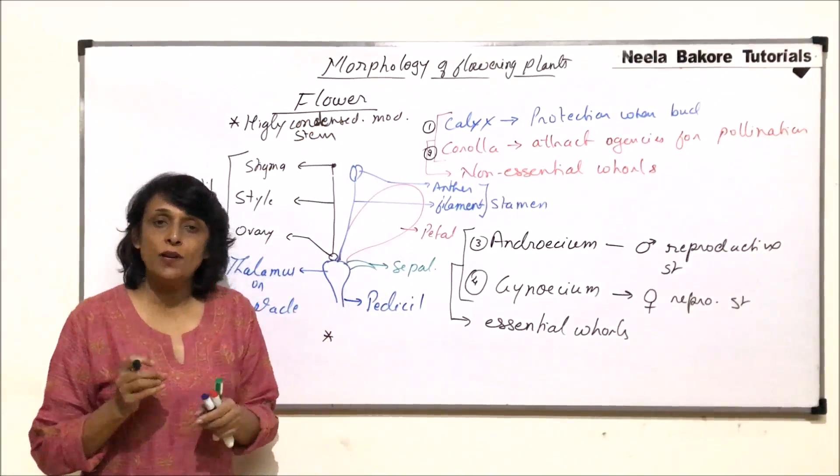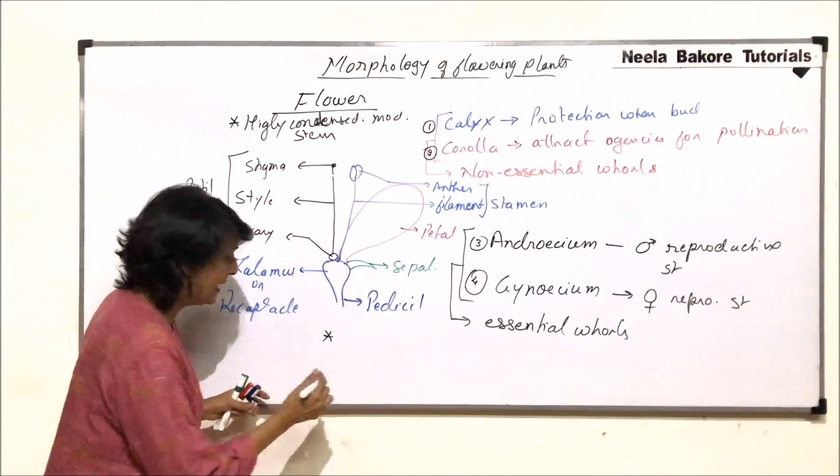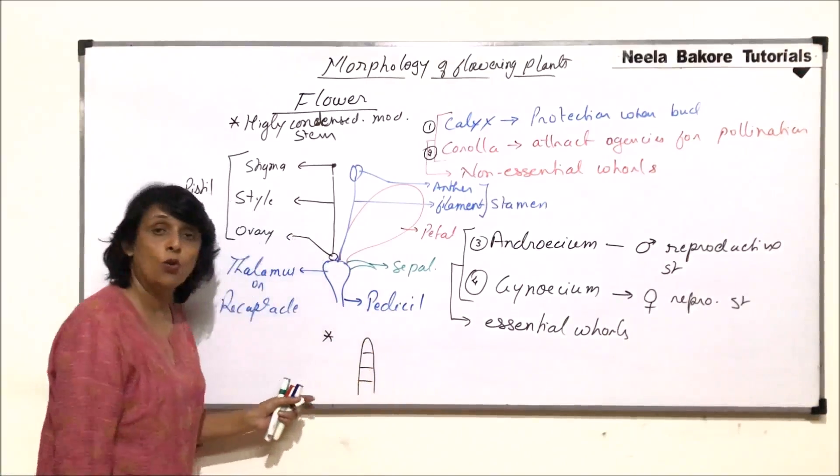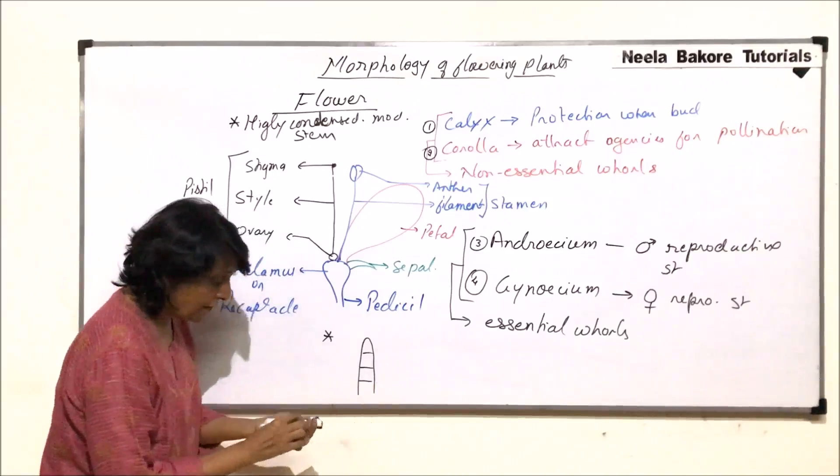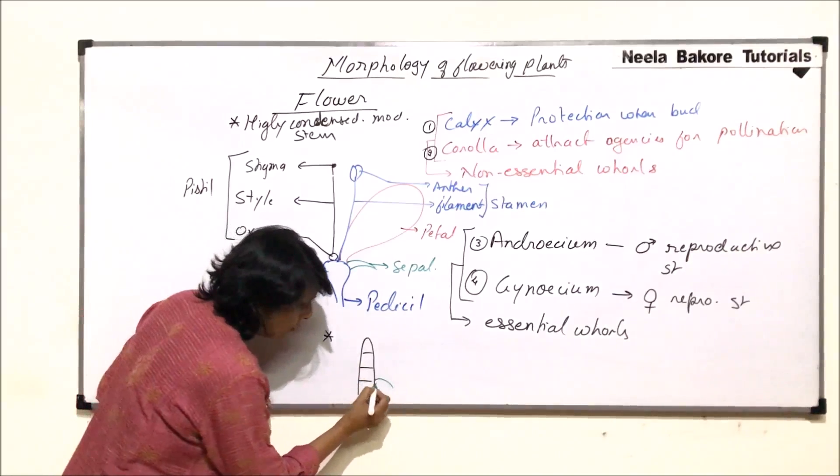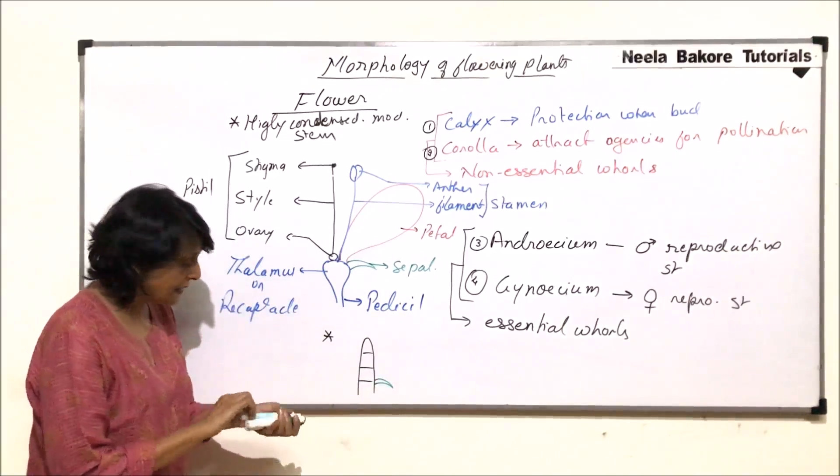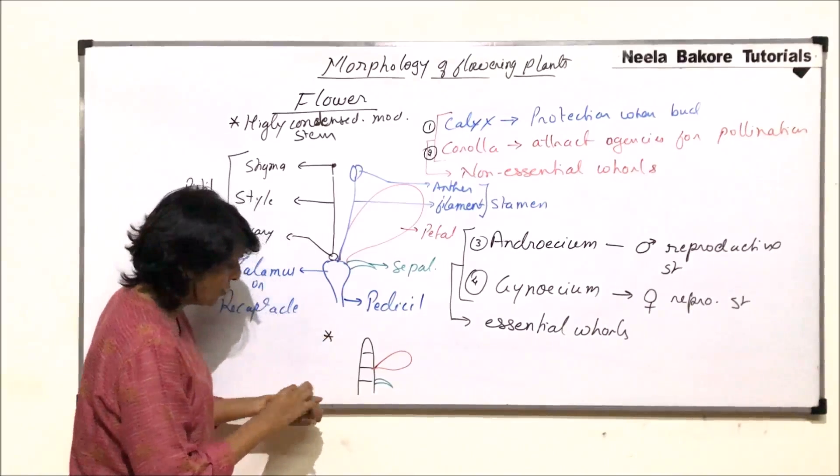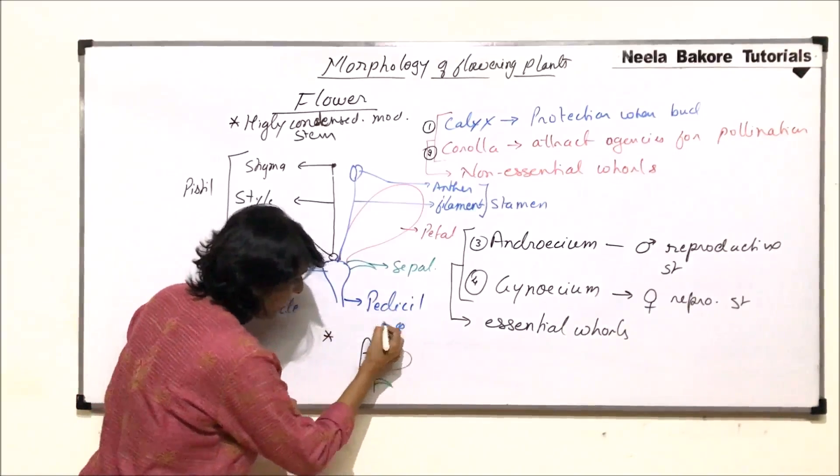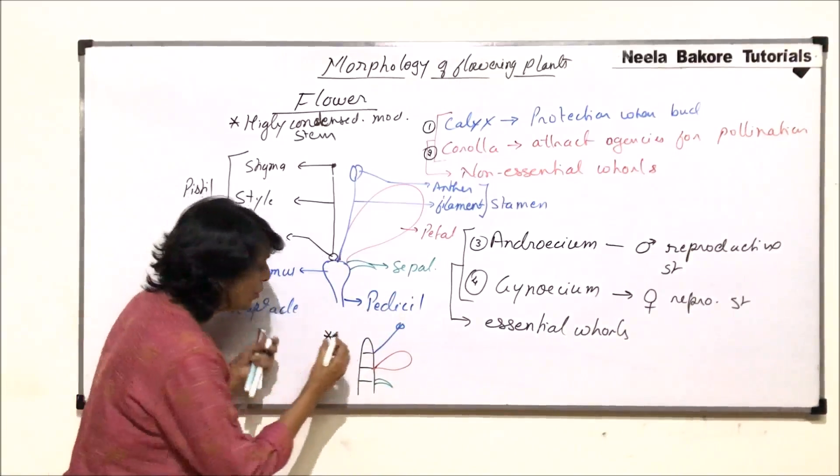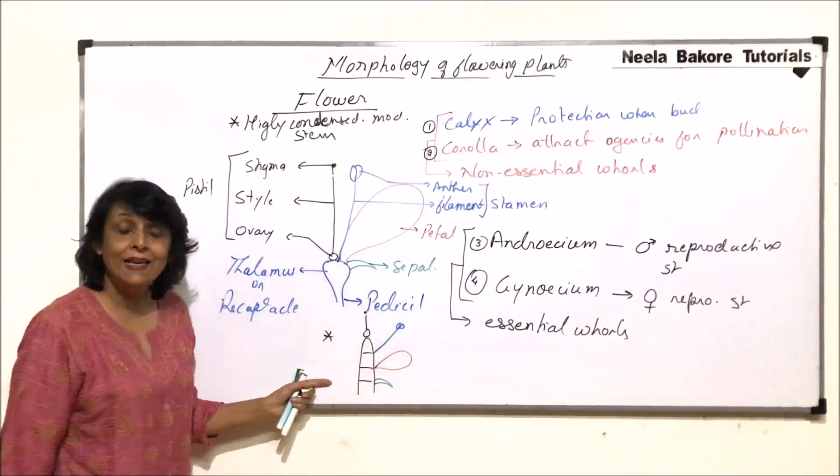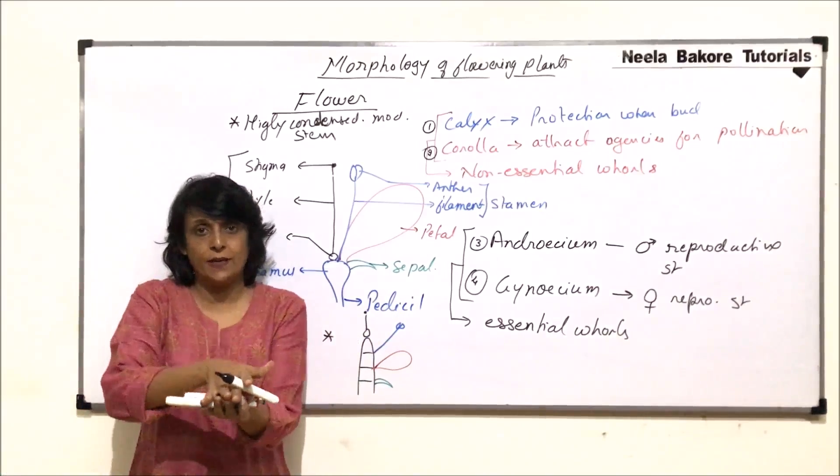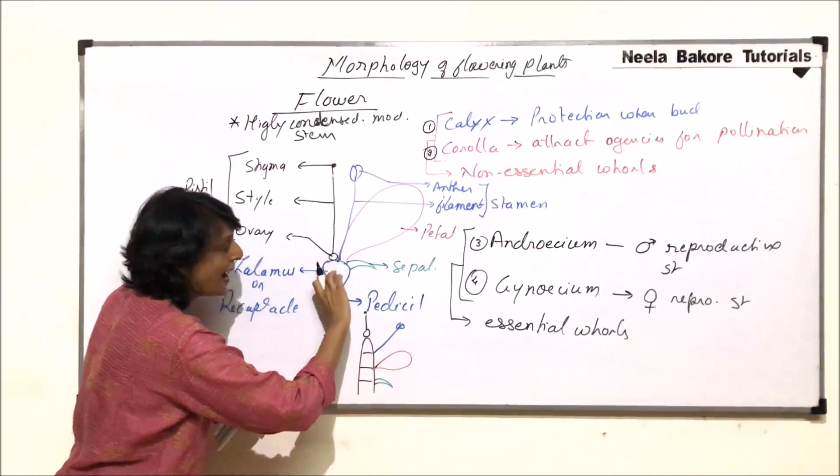Why are we calling it a highly condensed and modified stem? And if it is like that, then if this was the stem, stems have nodes and internodes. And if it is a modified whorl, then at one node, the sepals would have grown. At the second node, the petals would have grown. The third has this androecium here. And the fourth is the innermost, that is the gynoecium. And it is highly condensed. If we take this long structure and press it, compress it, then this stem would become highly compact.